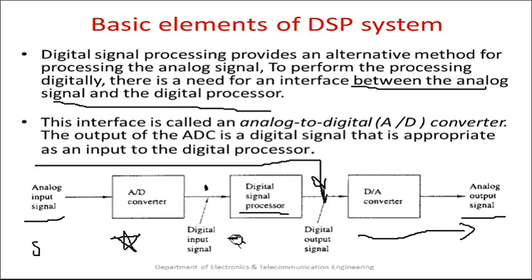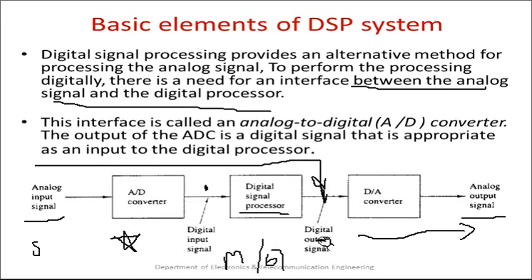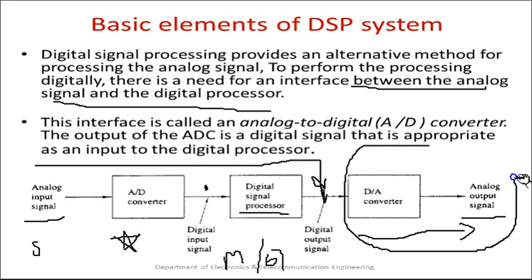These processors nowadays can be such as the MSP430 or the 6713 series — these are various processors we can use. After processing, if the application demands the signal back in analog format, a DAC — digital-to-analog converter — can be used. This DAC block is only applied to the diagram when needed.